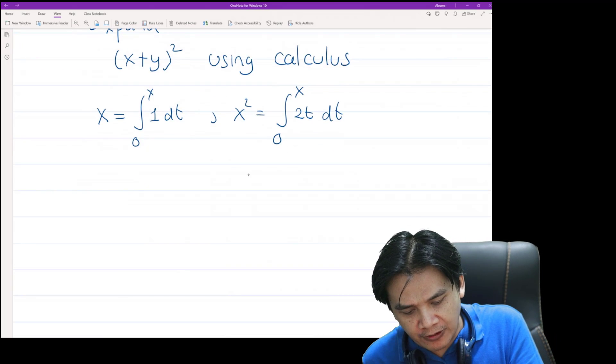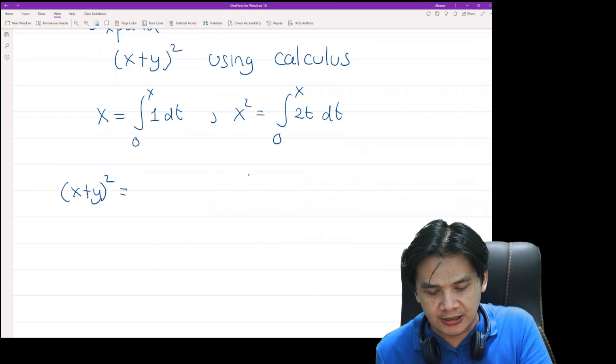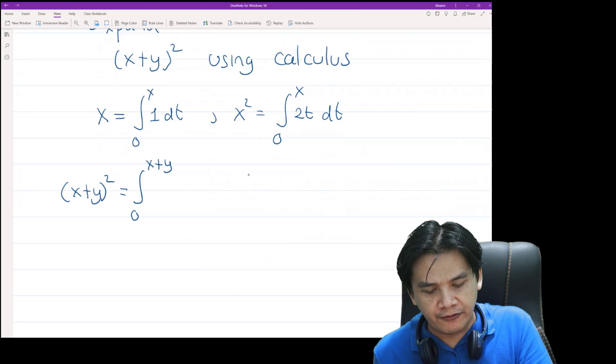Okay, so we start from x plus y squared, right? So according to the definition of x squared, this is exactly the integral from 0 to x plus y of 2t dt.